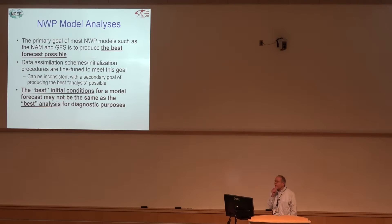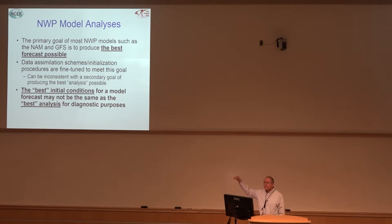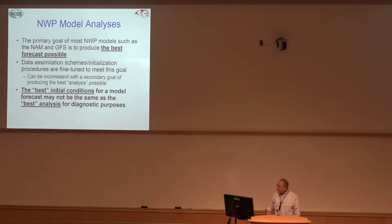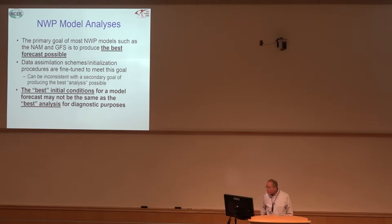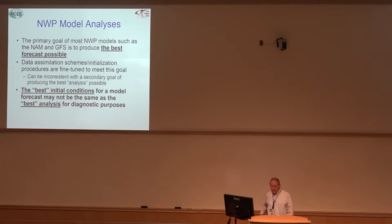One of the things we have to think about is the primary goal of models — models aim to produce the best forecast possible, focused on what's going to be happening in 12, 24, 36, 48 hours. They fine-tune data assimilation schemes to improve verification scores of the forecast. What this means is you sometimes loosen the fit to actual data and actually get a better model forecast. So the best initial conditions for a model may not be the same as the best analysis for a forecaster figuring out what's happening here and now.